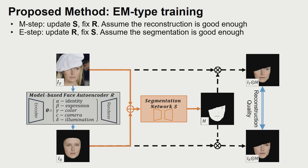The main challenge is that the model fitting and the outlier segmentation are mutually dependent on each other and need to be inferred jointly. We resolve this chicken-and-egg problem with an EM-type training strategy.